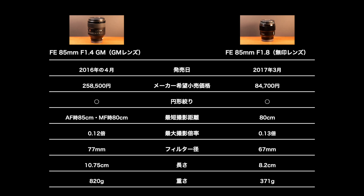無印レンズは、発売日が2017年3月で、GMレンズとは1年違いです。メーカー小売価格は84,700円で、GMレンズの3倍以上します。円形絞りはGMレンズと同じです。最短撮影距離は80cmで、GMレンズよりAF時は5cm短いです。最大撮影倍率は0.13で、GMレンズとほぼ変わりません。フィルター径は67mmで、GMレンズの方が1cm大きいレンズです。